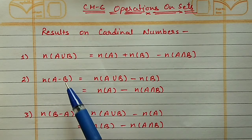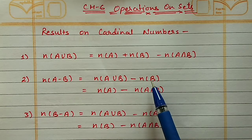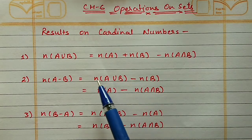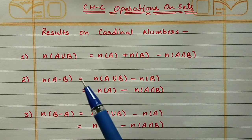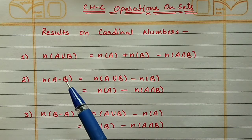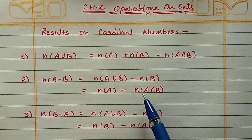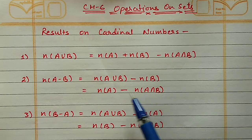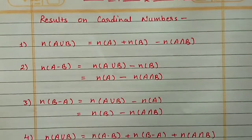The second property is N(A - B) = N(A∪B) - N(B). From the union of these two sets, if we remove the elements of B then we will get N(A - B). Or we can write it as N(A) minus N(A∩B), meaning we remove the common elements from set A.